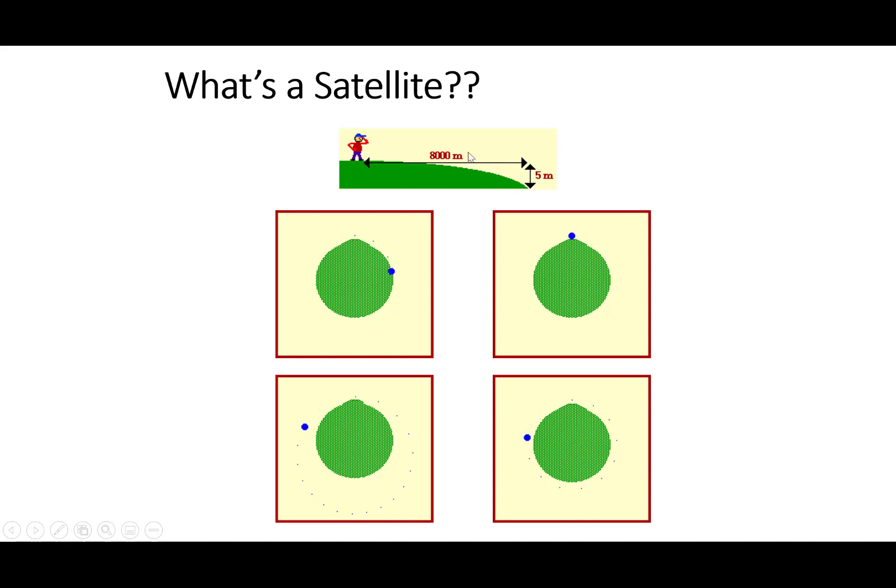But if we zoom out of the Earth on a large enough scale, the Earth actually curves down. So the projectile's eventually going to fall, but the Earth curves down away from it. If we throw a projectile hard enough, it'll curve a little bit around the Earth.